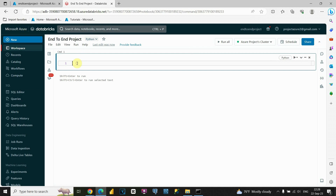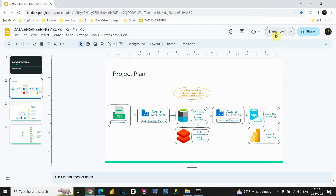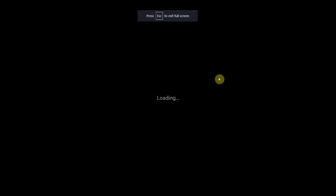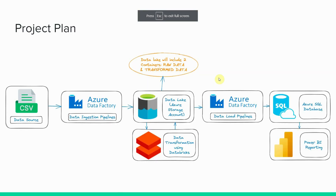Let's change the notebook name to 'End to End Project.' Press Enter. Now we're able to type our code here. Let's go back to that project plan. As you can see, we need to connect Databricks to Azure Data Lake, so we'll need to create some kind of connection between those two.